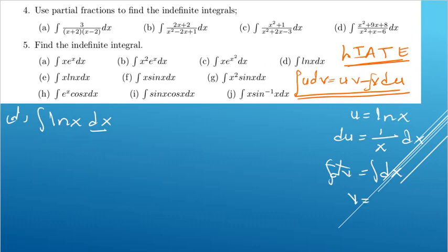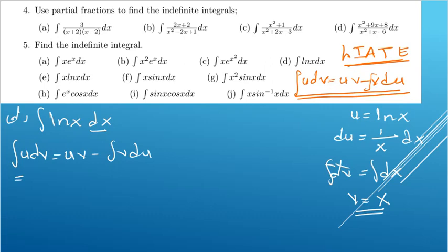Applying the formula: integral of u dv equals uv minus integral of v du. Our u is ln(x) and v is x, so we get x·ln(x) minus the integral of x times (1/x) dx. Notice that x and 1/x cancel.